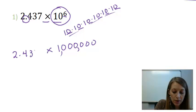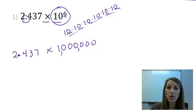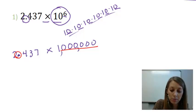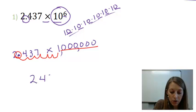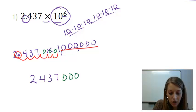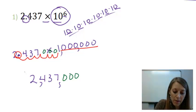So this is 2.437 times one million. To multiply by one million, you move your decimal point over the number of zeros you have — six zeros — so move the decimal six places to the right. Moving one, two, three, four, five, six places gives us 2, 4, 3, 7, and each remaining loop gets filled with a zero. So this translates to 2,437,000. That's the official answer.